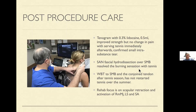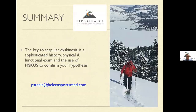After the season was over, we did a whole blood tenotomy to the entirety of the superior medial border, addressing the conjoined tendon component — rhomboid minor, levator scap, and serratus anterior. She then went on to a scapular rehabilitation protocol developed with a physical therapist I work with. She's doing well, but hasn't really started tennis this year.